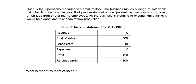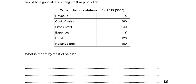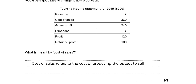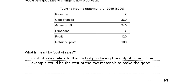Table 1 is an income statement with a couple of key elements missing, which you can already guess will be questions asking you to calculate them. The first question asks for a simple definition — a two-marker — asking what is meant by cost of sales. Cost of sales refers to the cost of producing the output to sell. As it's a two-marker, I recommend adding a safety point: one example could be the cost of raw materials to make the goods, which guarantees you the two marks.